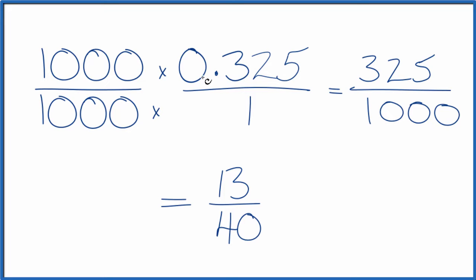So we've changed the decimal 0.325 to the fraction 13 fortieths. If you divide 13 by 40 or 325 by 1,000, you'll get the decimal 0.325.